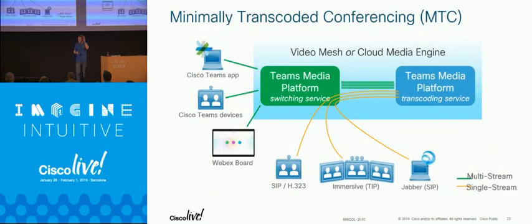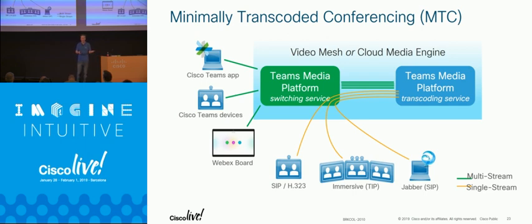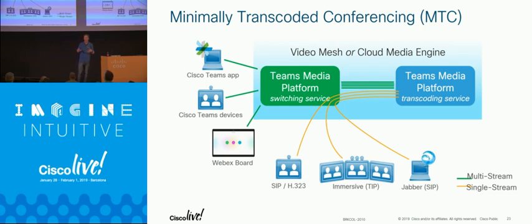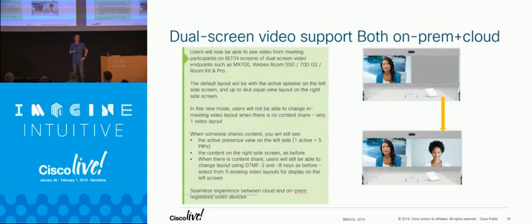This is one of my last platform slides. We have a concept called minimally transcoded conferencing. What that means is we do video switching wherever possible because it's faster, higher performance, and leads to better quality, and we transcode where necessary. If you're using Teams, a WebEx board, or a cloud-registered device, these are all doing multi-stream — switching video. Classic devices such as anything that's SIP or H.323, our Jabber clients as well, whether you have a video mesh node or go direct to the cloud, all follow the same basic procedure.